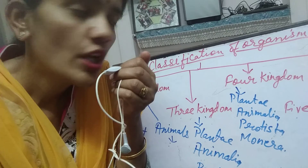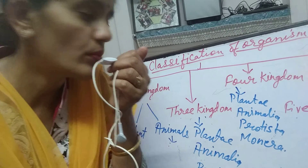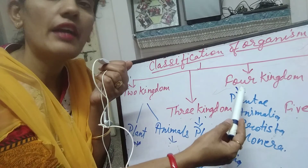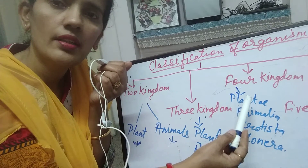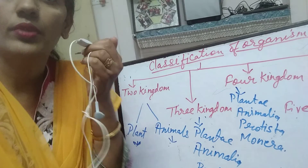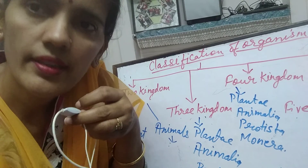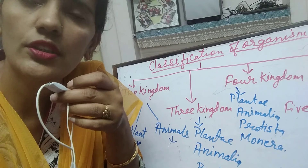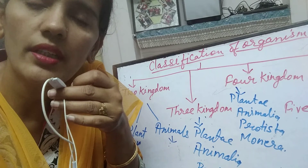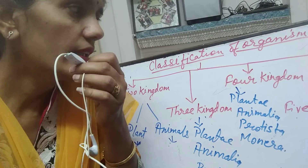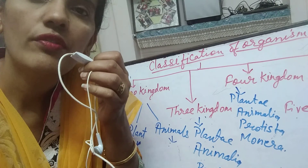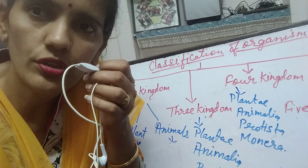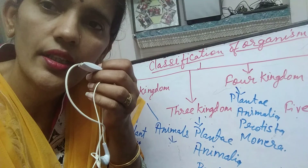In this session we have covered two kingdom classification, three kingdom classification, and four kingdom classification. Watch the video properly, and if you have any doubts you can call or ask. In the next session, we will be discussing the five kingdom classification. Thank you.